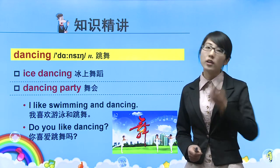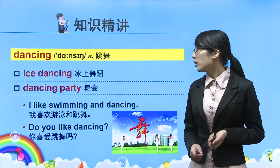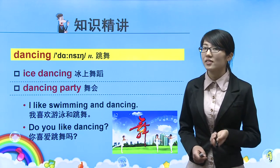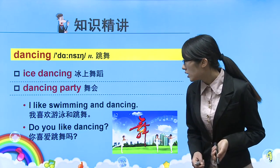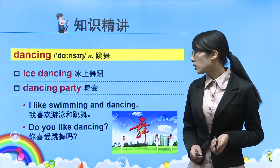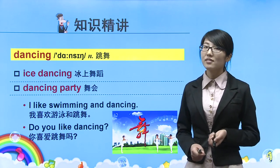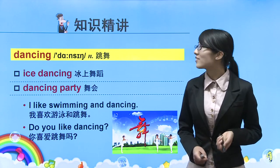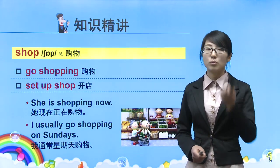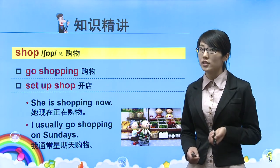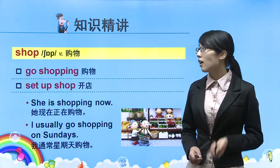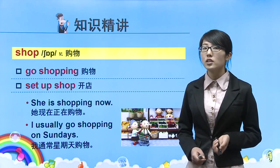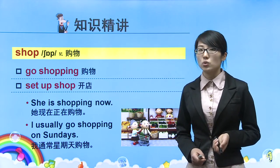Next word: dancing，dance，舞蹈，跳舞，可以做名词也可以做动词。Ice dancing，冰上舞蹈；dancing party，舞会。Sentence: I like swimming and dancing. Do you like dancing? Yes, I do. / No, I don't.